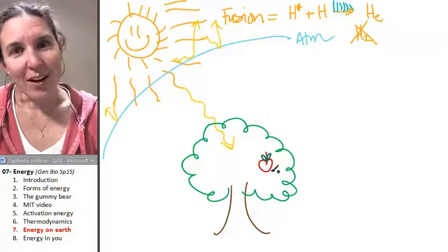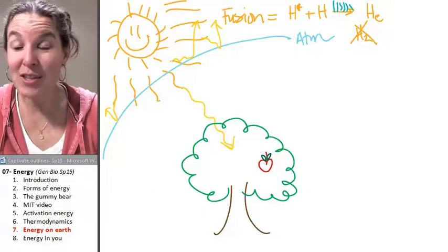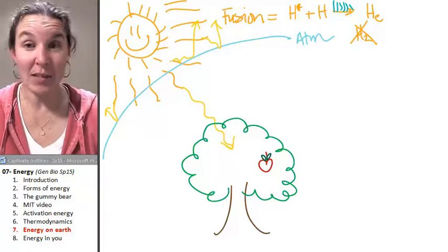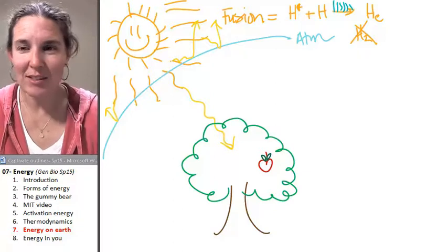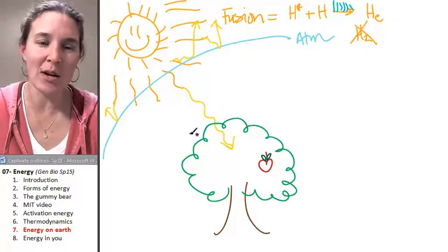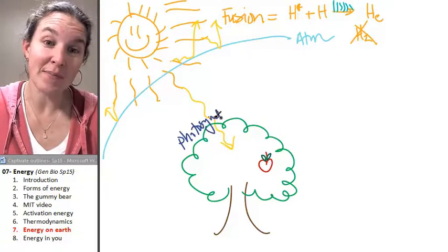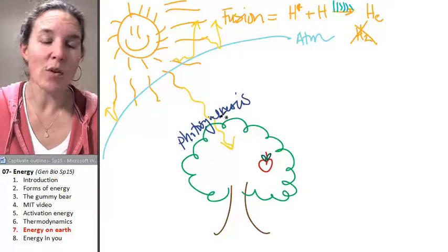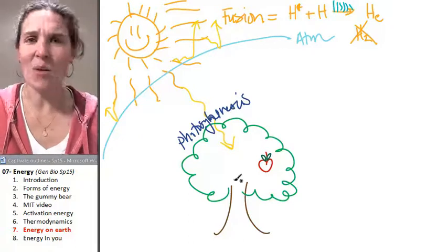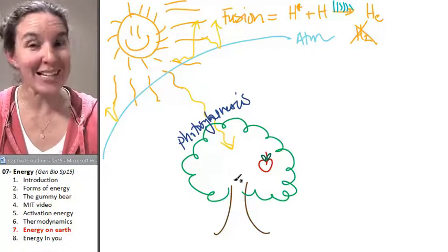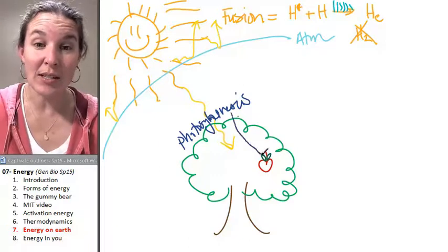To make an apple. The tree captures the light from the sun and makes sugar. Seriously? How awesome is that? What's that process, clowns? Photosynthesis. Photosynthesis takes the light energy, and then with some other stuff—and we're spending an entire day on photosynthesis—produces sugar.